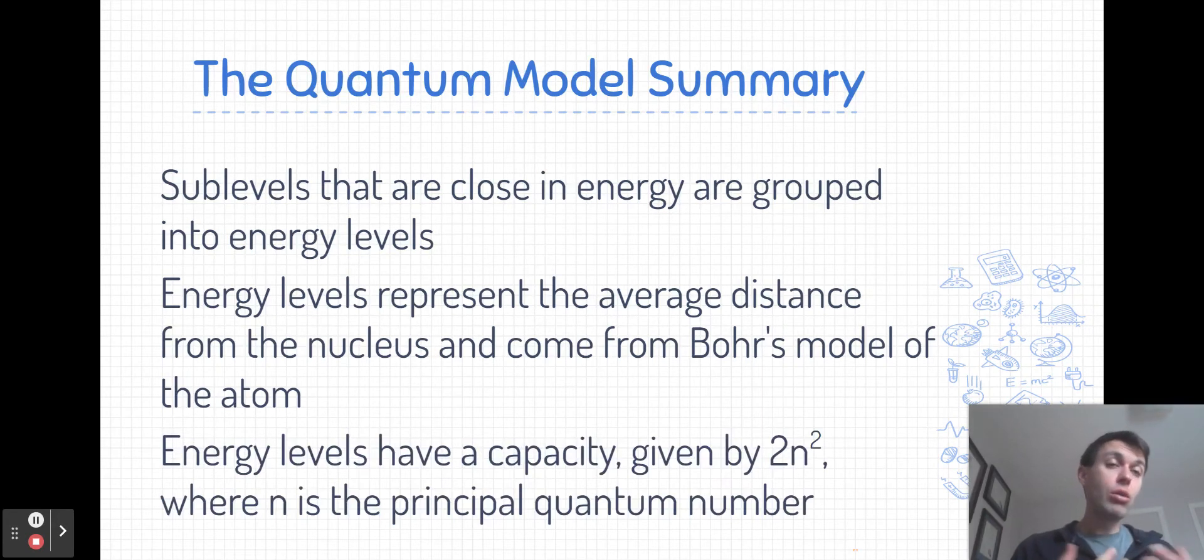Energy levels themselves also have a capacity. You may have learned this previously that the capacity is given by the formula 2n squared, where n is the principal quantum number. So the first energy level can hold two electrons, the second energy level has a capacity of eight, third energy level capacity of 18, and so on. This formula still holds true in the quantum model.